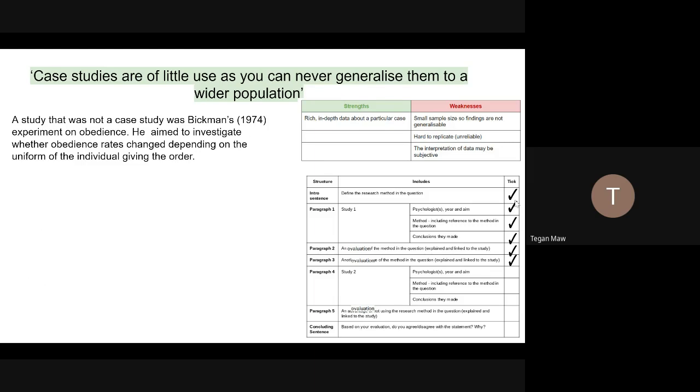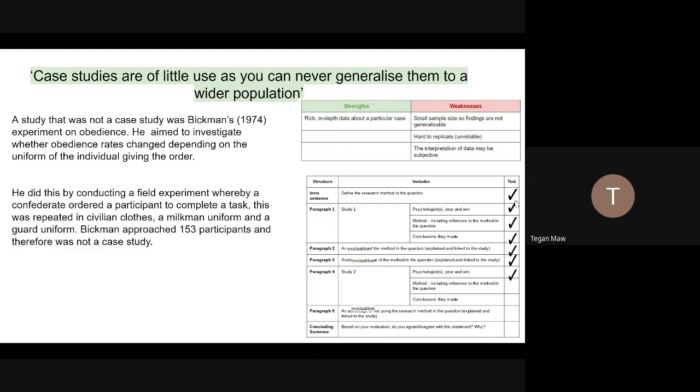Now let's have a look at the method, including a reference to the research method in the question. So he did this by conducting a field experiment whereby a confederate ordered a participant to complete a task. This was repeated in civilian clothes, a milkman uniform and a guard uniform. Bickman approached 153 participants and therefore this was not a case study. Again, just really cementing that we understand that a case study is a very small sample and a sample of 153 is not a case study. So we're using this to contrast the case study study of the Wolfman.